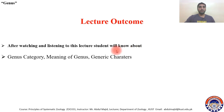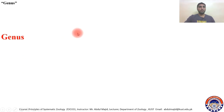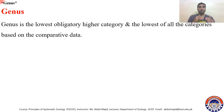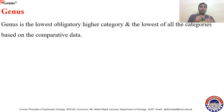Genus is actually the lowest obligatory higher category. The lowest categories are species or subspecies. Categories below species level are known as lower categories, and categories above genus are known as higher categories. So in higher categories, the lowest obligatory category is genus.